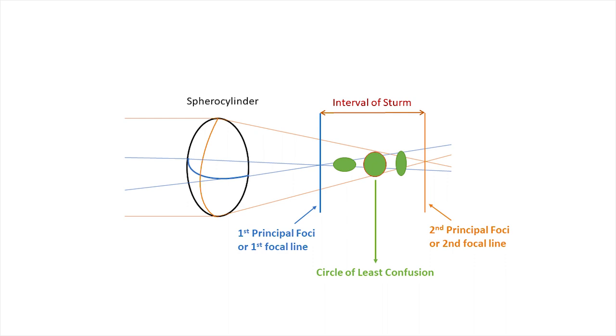Let us take a look at what happens when light passes through a spherocylinder, or a system which has two curvatures, with one steeper than the other. For the sake of simplicity, in this diagram, only two rays of light are highlighted. The one in orange, in the vertical meridian, and one in blue, the horizontal. It is seen in this diagram that both these rays are focused to two focal points or principal foci. Between the two foci is the interval of Sturm, and at the midpoint of the two foci is the circle of least confusion. Together, they constitute the conoid of Sturm.